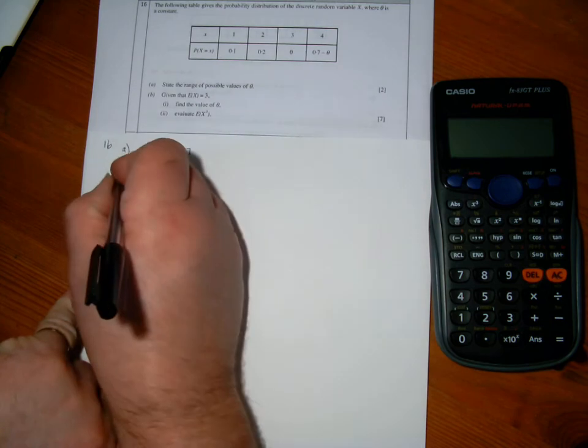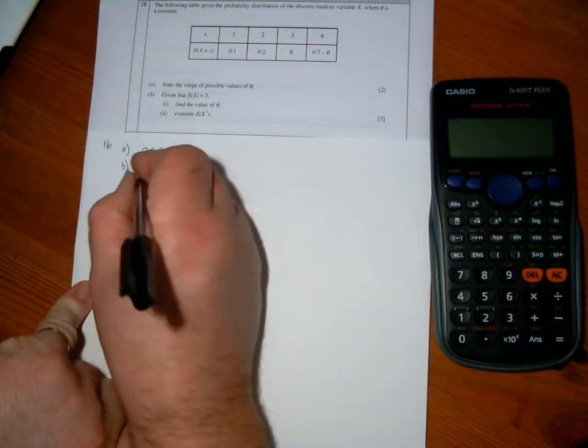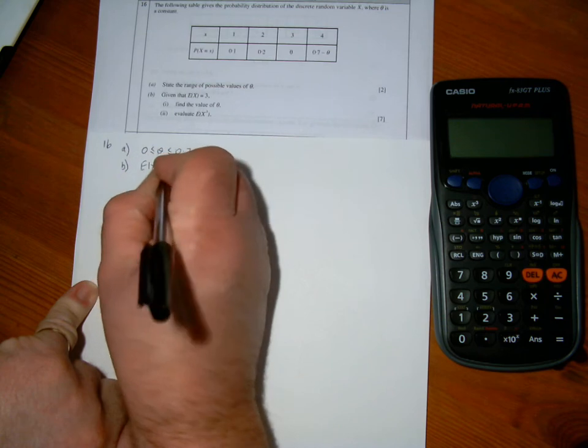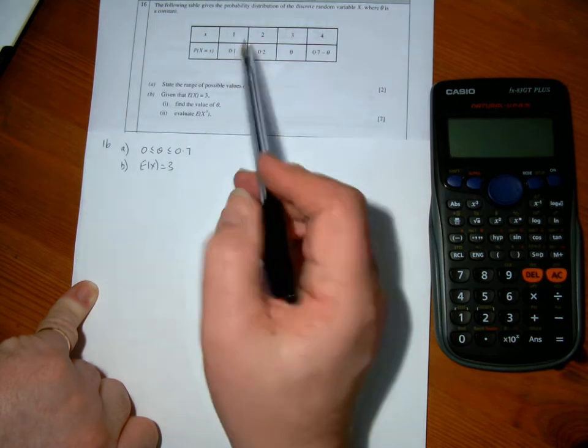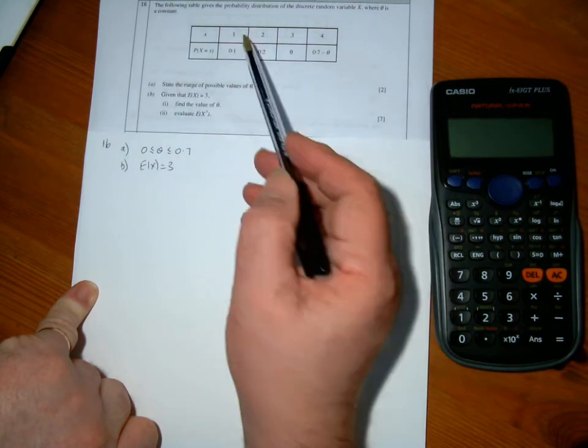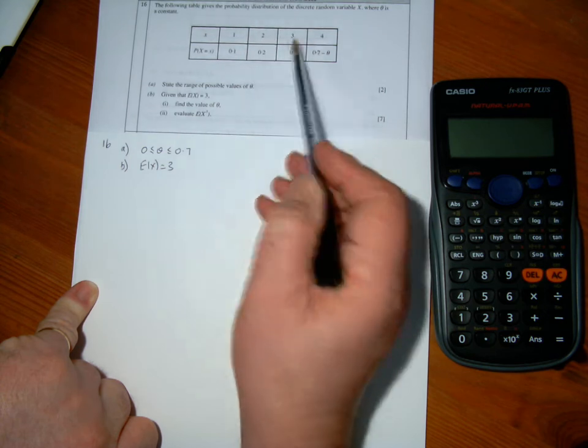And part b, I'm told that E(X) is equal to 3. Find the value of theta. Okay, to calculate E(X) from the table, it's the x value times its probability, plus, and I go on throughout the table.